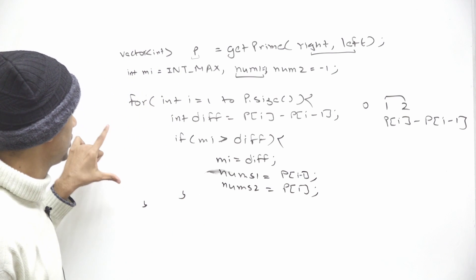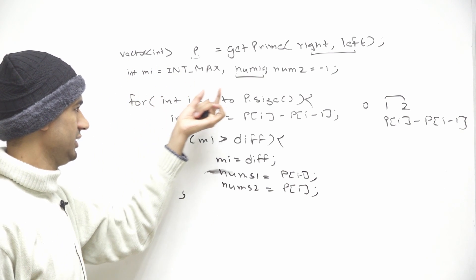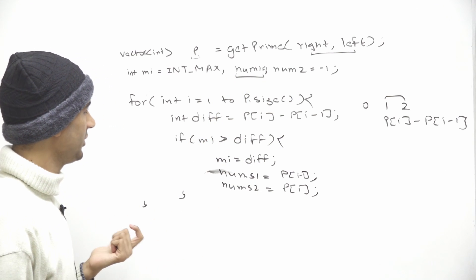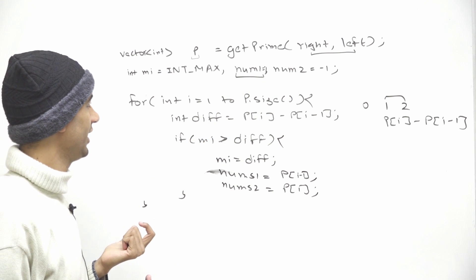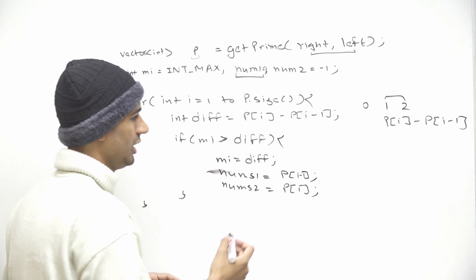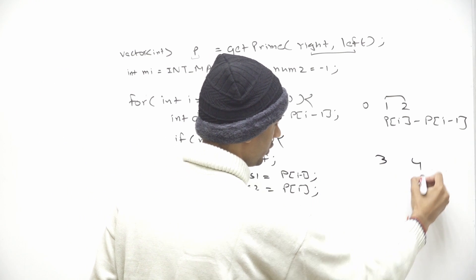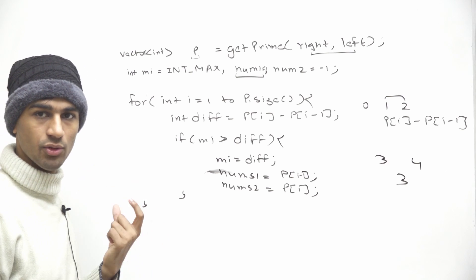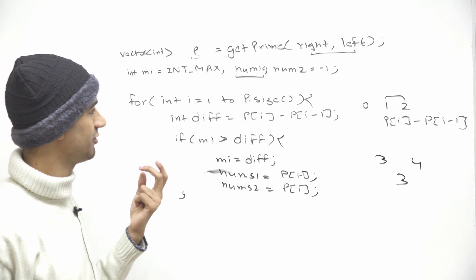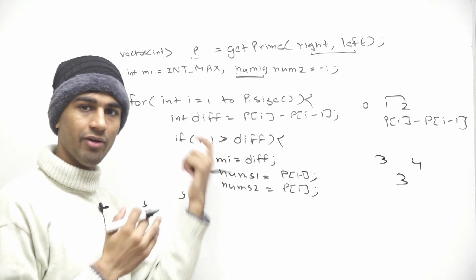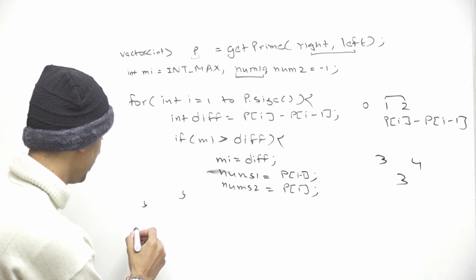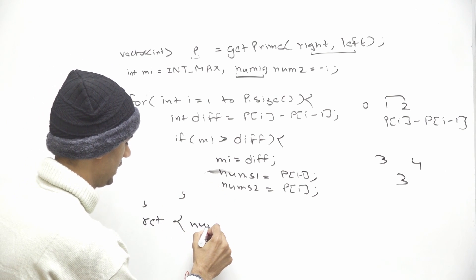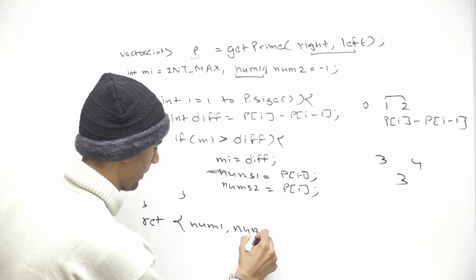After this for loop, mi will have the minimum difference and nums1 and nums2 will have the corresponding prime numbers. In some edge cases we might not get more than one prime number — for example, if left equals 3 and right equals 4, we only have one prime. In that case the loop won't execute and nums1 and nums2 remain -1. So we simply return the pair of nums1 and nums2.